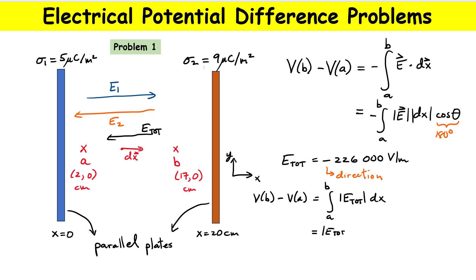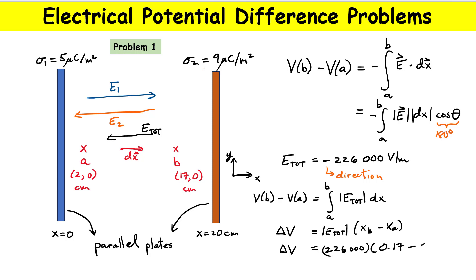Substituting everything in: 226,000 times (0.17 minus 0.02), converting everything to meters. Point B is at 17 centimeters (0.17 m) and point A is at 2 centimeters (0.02 m). Putting that in the calculator gives a potential difference of approximately 33,900 volts. That's it for the first problem.